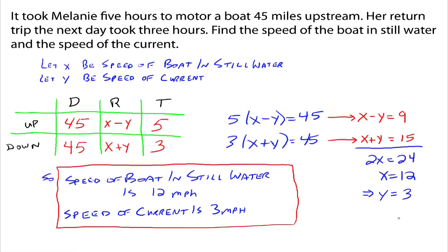The same idea works for the speed of an airplane going with the wind or against the wind — same setup. You can use this distance, rate, and time chart to help figure out the actual equations for your system. That's it — study well, and please let me know if you have any questions.